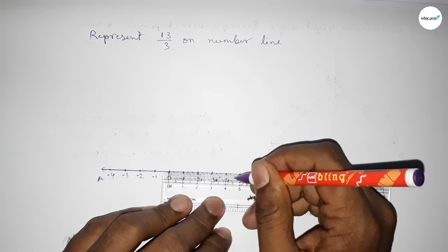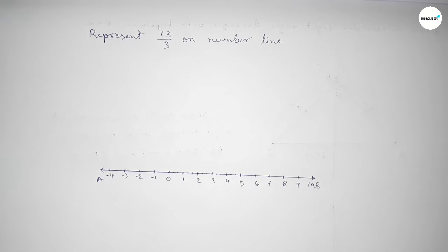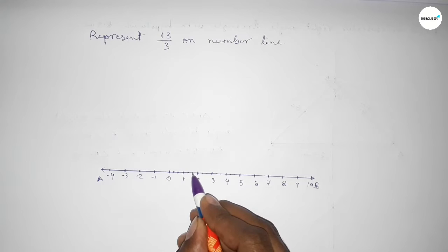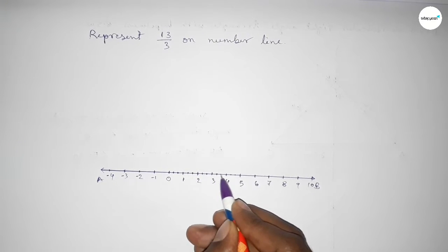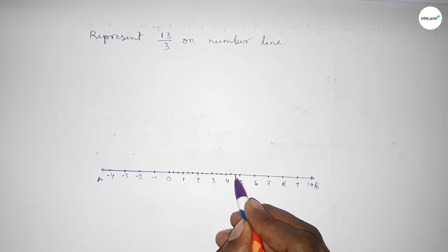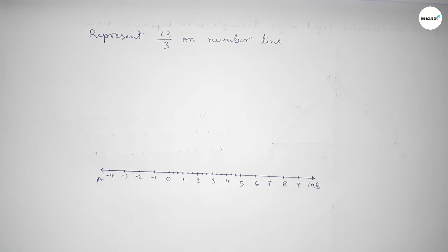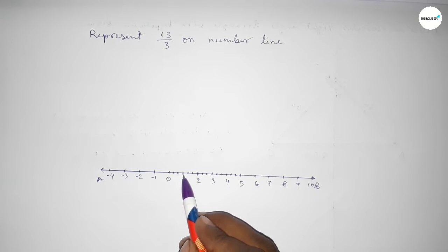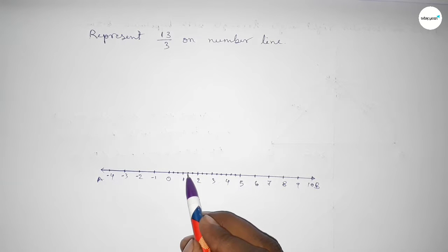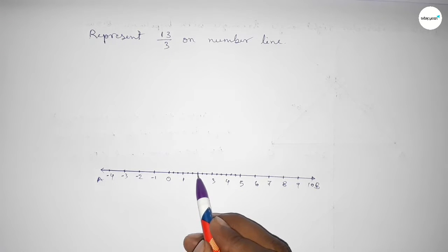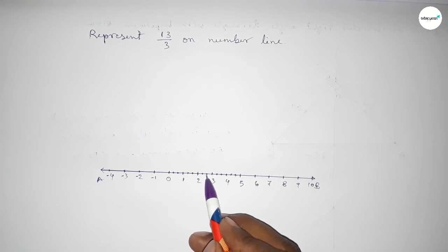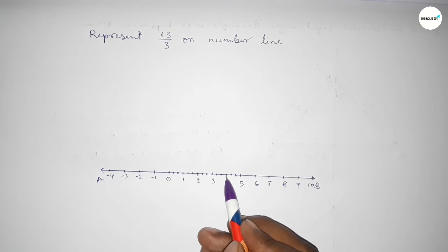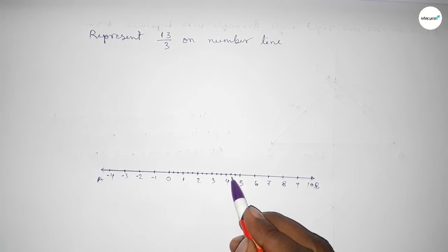By this way, we divide the distance between any two numbers into three parts approximately. Now marking the numbers with black color to understand perfectly: 1 over 3, 2 over 3, 3 over 3, 4 over 3, 5 over 3, 6 over 3, 7 over 3, 8 over 3, 9 over 3, 10 over 3, 11 over 3, 12 over 3, and 13 over 3 on the number line.